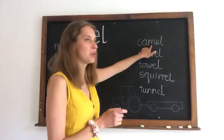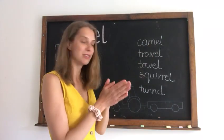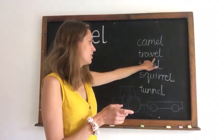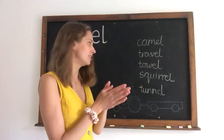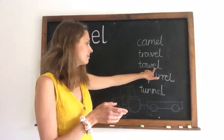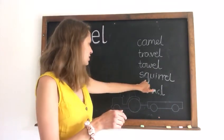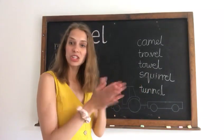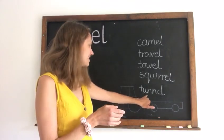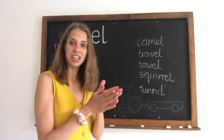So we've got camel, camel. Travel, travel. Tell, tell. One syllable. Tell. Squirrel, squirrel. Travel, and tunnel, tunnel.